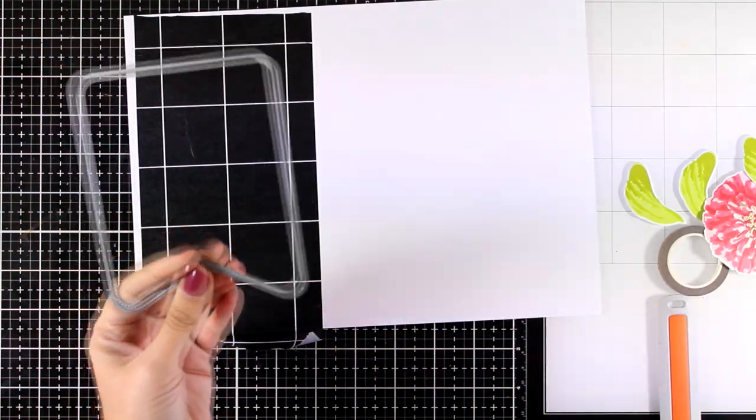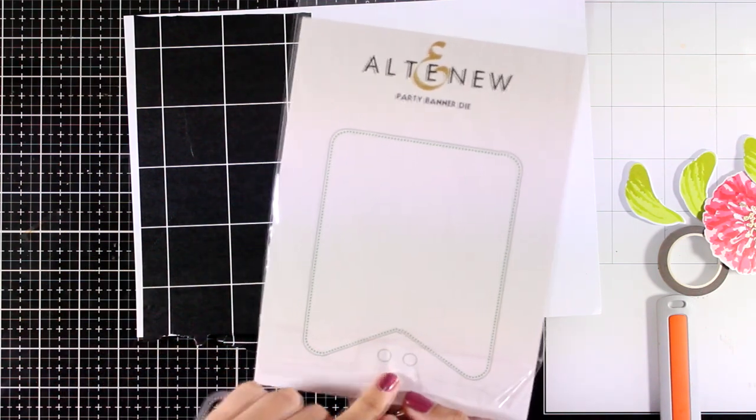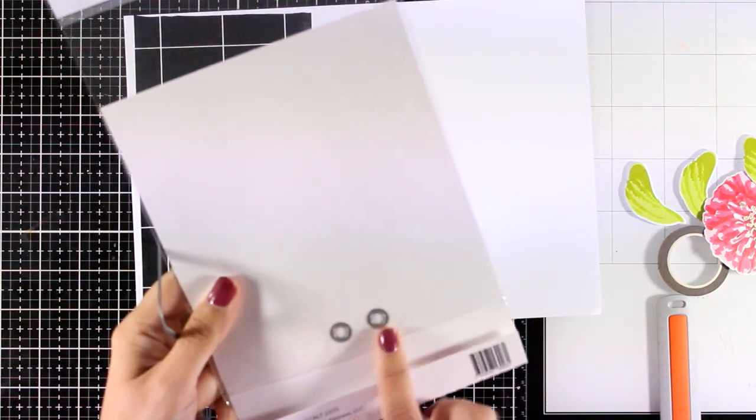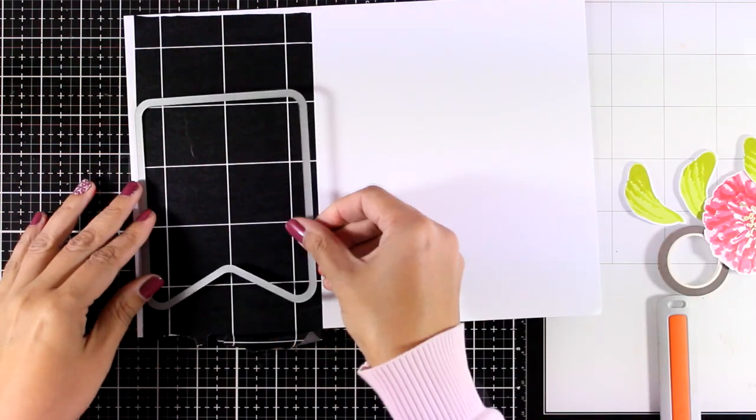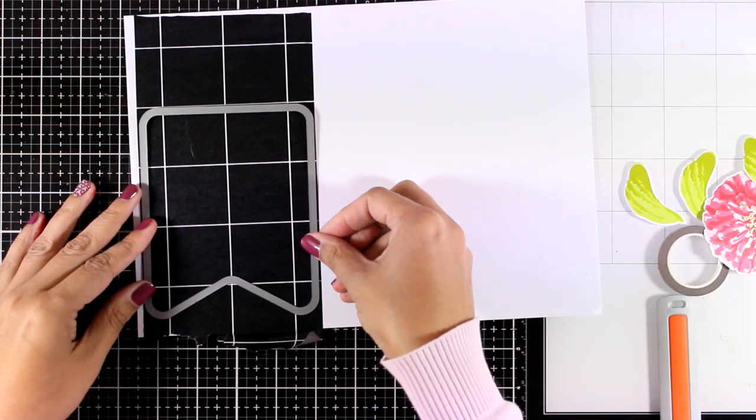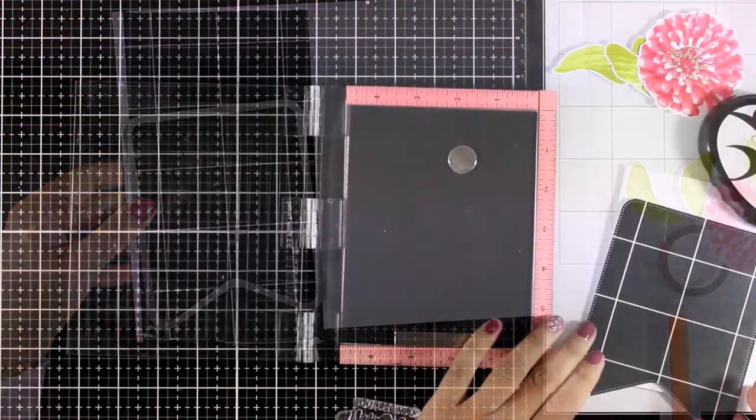I'm going to use this banner die called Party Banner Die from an earlier release by Altenew. It also comes with two little dies that you can cut out at the top to thread some ribbon or string. In this case, I'm not going to use those holes, I'm just going to cut out the banner.